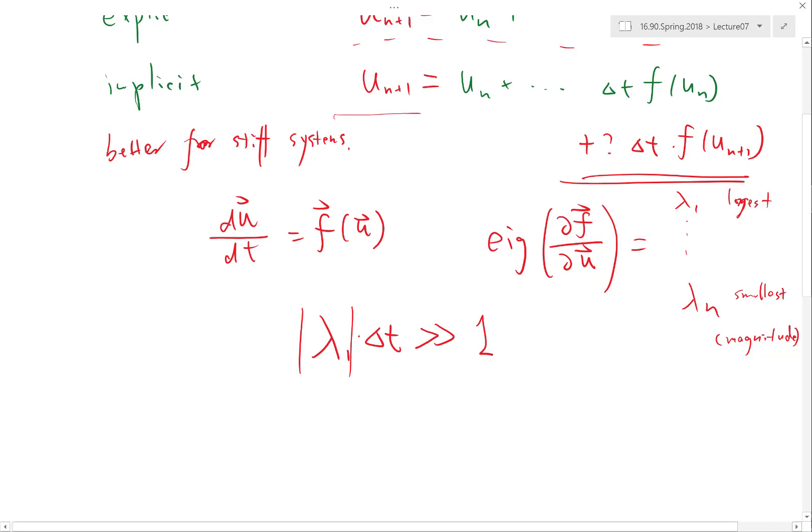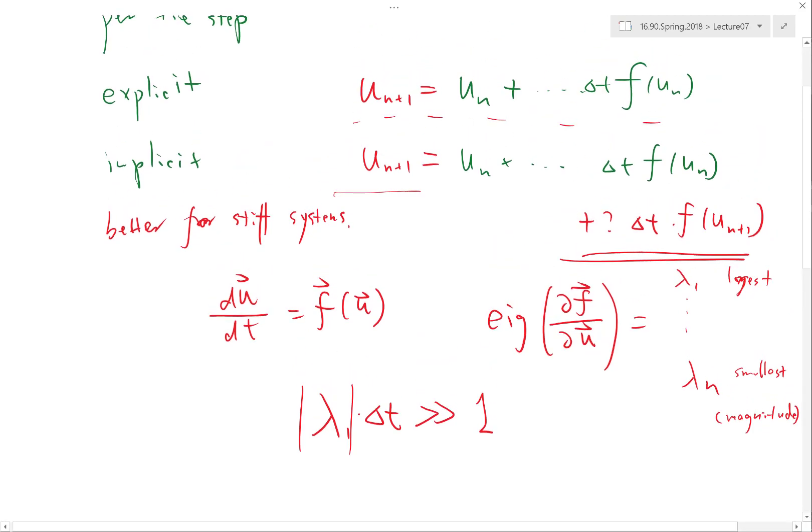And that is only possible using implicit time integration schemes. If you use an explicit time step, then your λ_1 times Δt has to be within the stability region of your time integration scheme, and that is usually order one. Even the best explicit integration schemes, you can't make this much greater than, let's say, 10 or 15 or so.